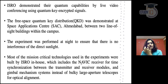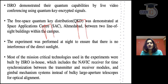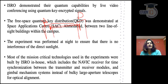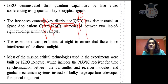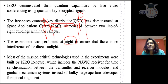What ISRO has done is their quantum capabilities have shared a live video. From building A to building B, they created a line of communication with quantum distribution. In this secure line of communication, they shared a video from A to B. It is not a big deal to share the video - it will be shared on WhatsApp. But the technology and the method that has been used to share this video is what is important.